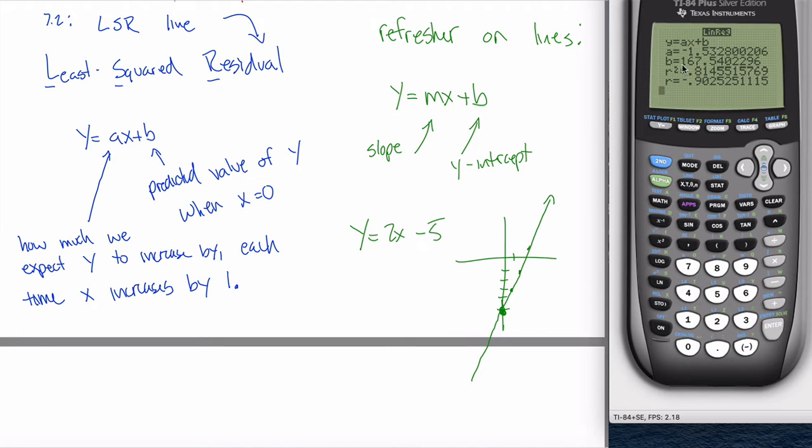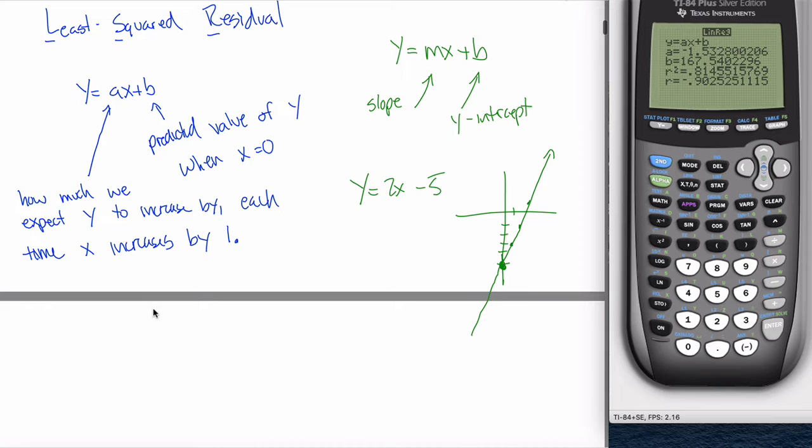So I'll tell it that my x values are in L1 and my y values are in L2. And if you have a different version of the calculator, you just put in L1, L2. And then you can hit calculate. And it spits out all this information. If you're only seeing a, b, but not r and r squared, make sure you turn on your diagnostics and refer to the prior video on how to do that. But this a and this b here are exactly the a and the b in this equation, y equals ax plus b, which is exactly the equation of your LSR line. So what I'm saying in this example, if I round to three decimal places, is that y is equal to negative 1.533 times x plus b, which is 167.540, I guess rounded at three decimal places. This is my LSR line.